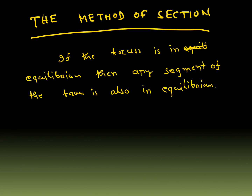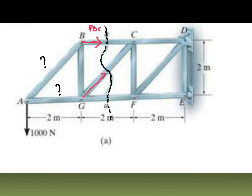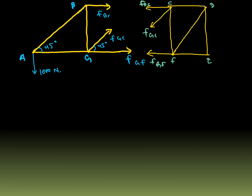Now for method of section: if the truss is in equilibrium, then any segment of the truss is also in equilibrium. If you cut any segment, it is also in equilibrium. Given this truss, they may ask for the force along AB or force along AG, and you solve using method of section. You cut along a section, assume forces FBC, FGC, and FDF are all tensile — this is an assumption only. After cutting, you get two parts, and this is the method of section.